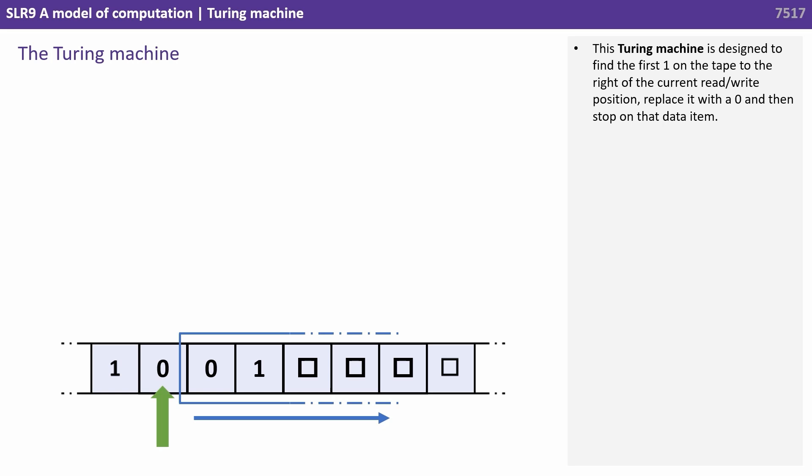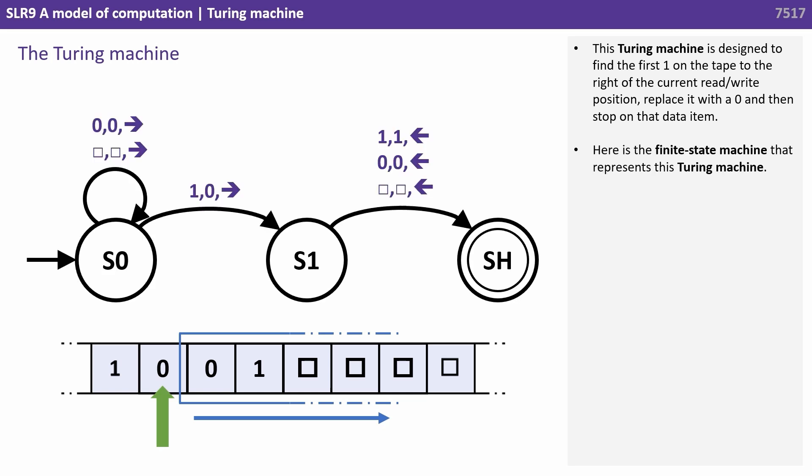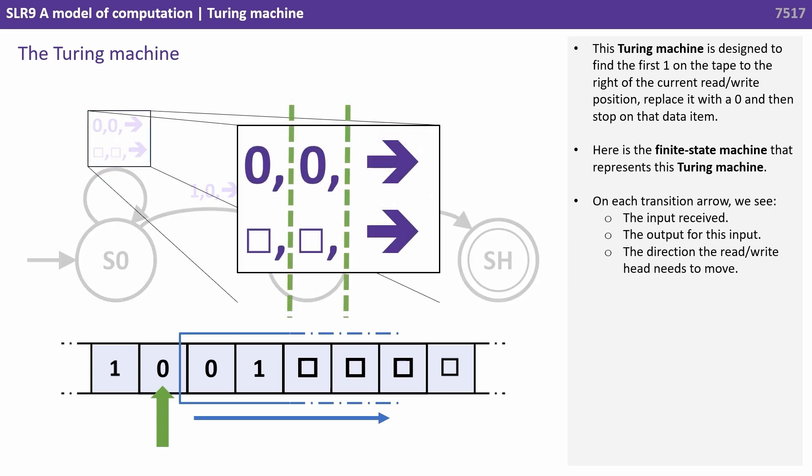This Turing machine is designed to find the first 1 on the tape to the right of the current read-write position, replace it with a 0, and then stop on that data item. Here is the finite state machine that represents this Turing machine. On each transition arrow we see the input received, the output for this input, and the direction the read-write head needs to move.